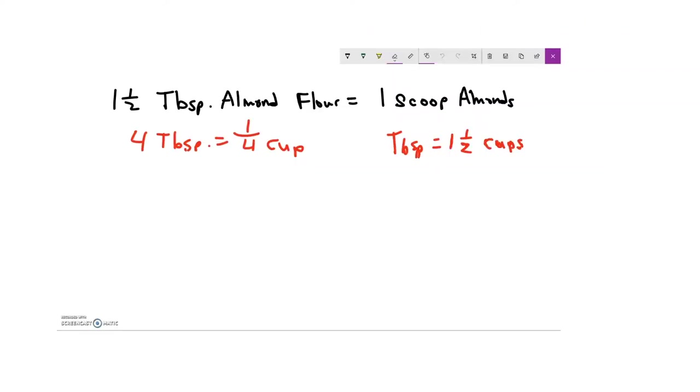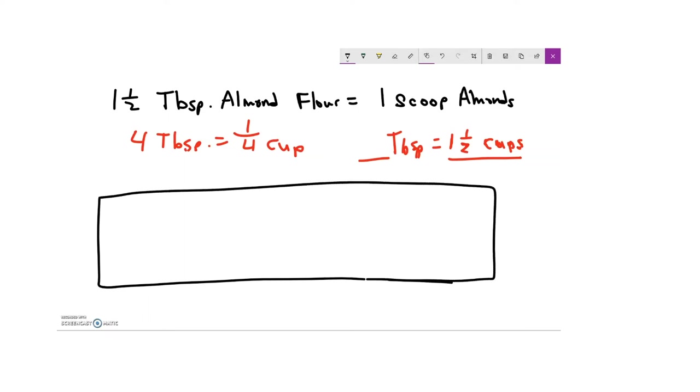So the first part of our question, which is how many tablespoons are in a cup and a half of almond flour? So if I know that there are four tablespoons in a fourth of a cup, let's try to create a ratio table to figure out how many tablespoons are in a cup and a half. So if I draw my ratio table here, four tablespoons is going to be the same as one fourth of a cup. That's my conversion factor.